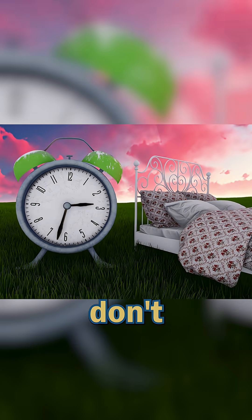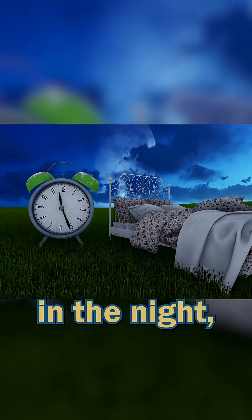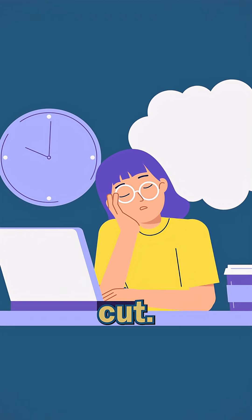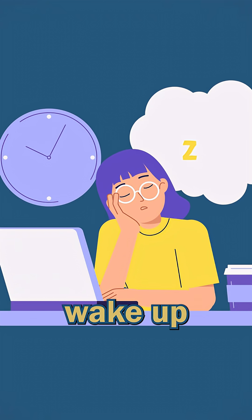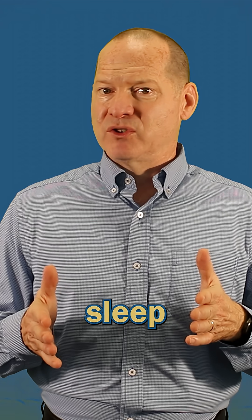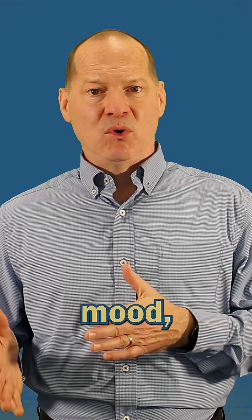Here's what most people don't realize. REM sleep happens later in the night, so it's the first thing to get cut when teens go to bed late and wake up early. Even just one night of poor sleep can disrupt attention, mood, and retention.